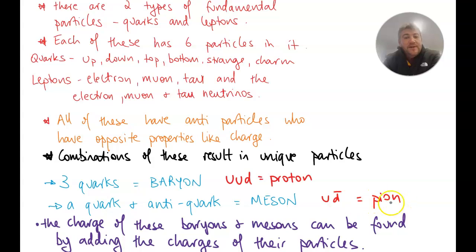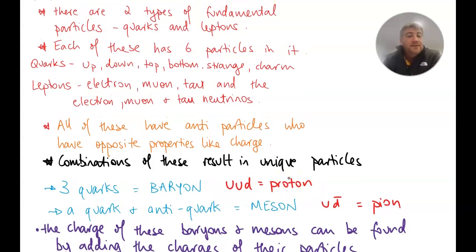Two thirds plus two thirds take a third is four thirds take a third, three thirds. So that's one. That's why a proton is positively charged, so a charge of plus one.